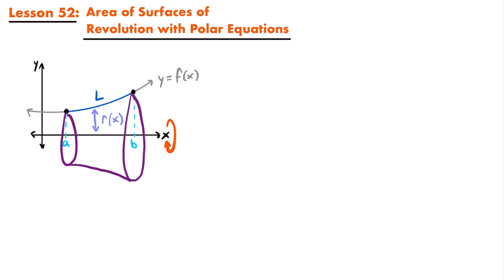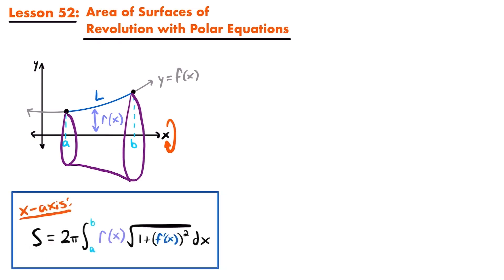To calculate the area of that surface of revolution formed by revolving our curve around the x-axis, we use the formula: surface area equals 2π times the integral from a to b of r(x) times the square root of 1 plus f′(x)² dx. Here r(x) is the radius in terms of x — essentially the distance between our curve and the axis of revolution. When revolving around the x-axis, that vertical distance is just f(x).